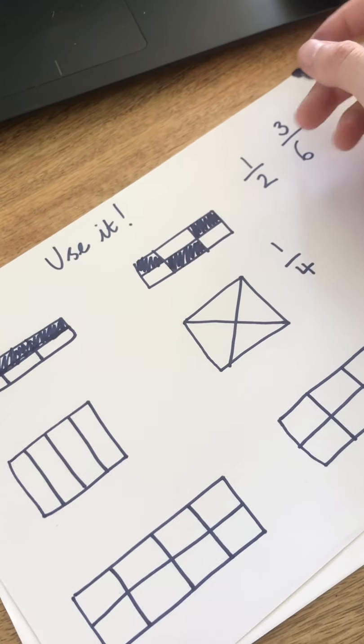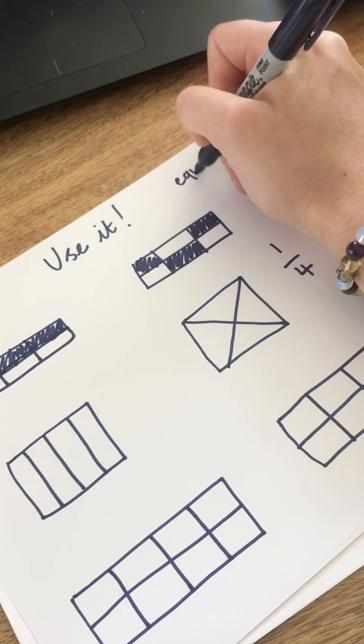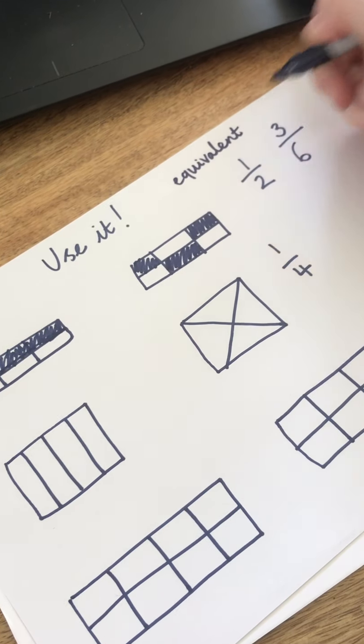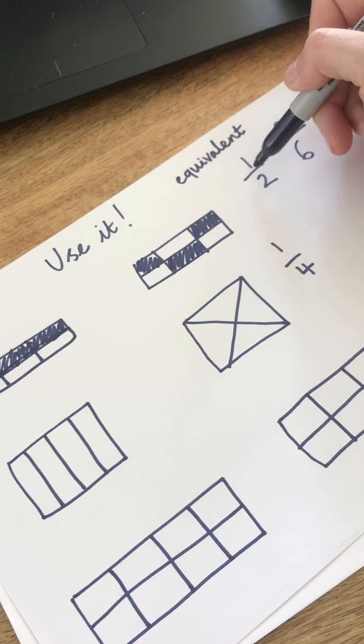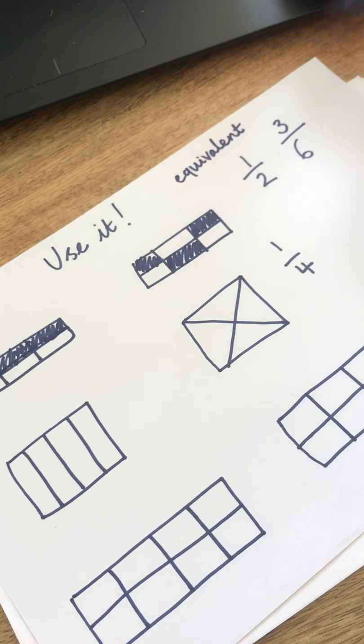There's a posh word for this if you want to be really fancy. It's called equivalent fractions. And equivalent is just a fancy word of saying the same as. So a half is the same as three-sixths, because half of six is three.